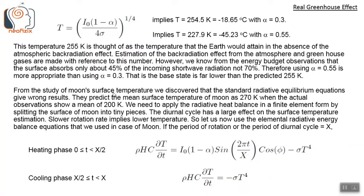From the study of the moon's surface temperature, we discovered that the standard radiative equilibrium equations give wrong results — they predict the mean surface temperature of the moon as 270 Kelvin when actual observations show 200 Kelvin. We need to apply the radiative heat balance equations in a finite element form by splitting the surface into many tiny elemental pieces. The diurnal cycle has a large effect on the surface temperature estimation. Slower rotation rate implies lower temperature and faster rotation rate implies higher mean surface temperature.